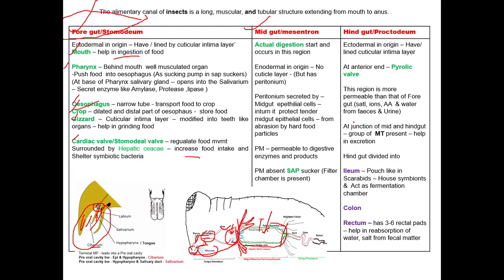Now come to the hindgut or proctodeum. The hindgut is the posterior-most part of the alimentary canal and it is ectodermal in origin, so it possesses the cuticular intima layer. The hindgut is highly permeable to salts, ions, amino acids, and water compared to any other region such as the foregut and midgut.